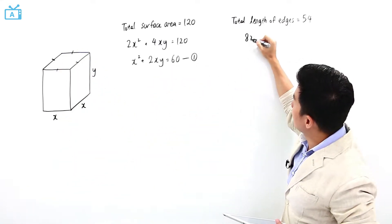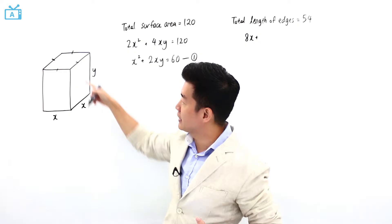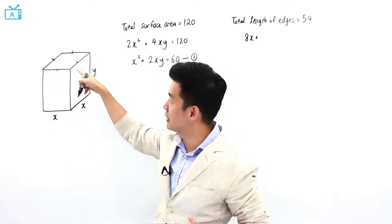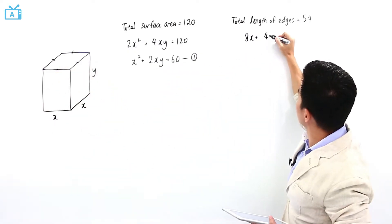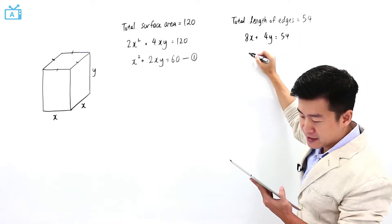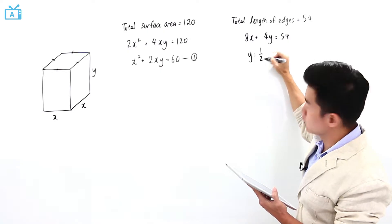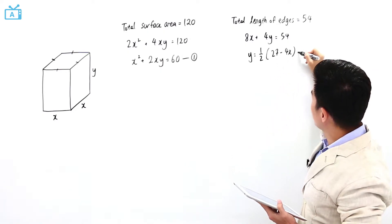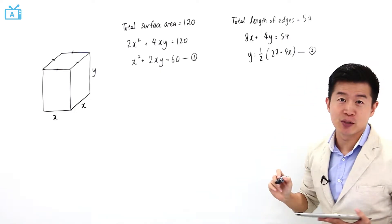Plus, as for y, there are 4 sides, 4 edges with length y. So plus 4y, this is equal to 54. If I were to make y the subject, y is going to be equal to half of 27 minus 4x. This I'm going to call equation number 2.